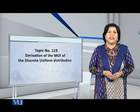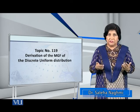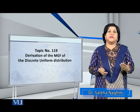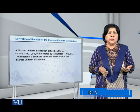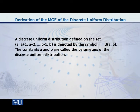Dear students, let me present to you the derivation of the moment generating function of the discrete uniform distribution. As you know, a discrete uniform distribution defined on the set a, a+1, a+2, and so on up to b, is denoted by the symbol U(a,b). The constants a and b are known as the parameters of the discrete uniform distribution.